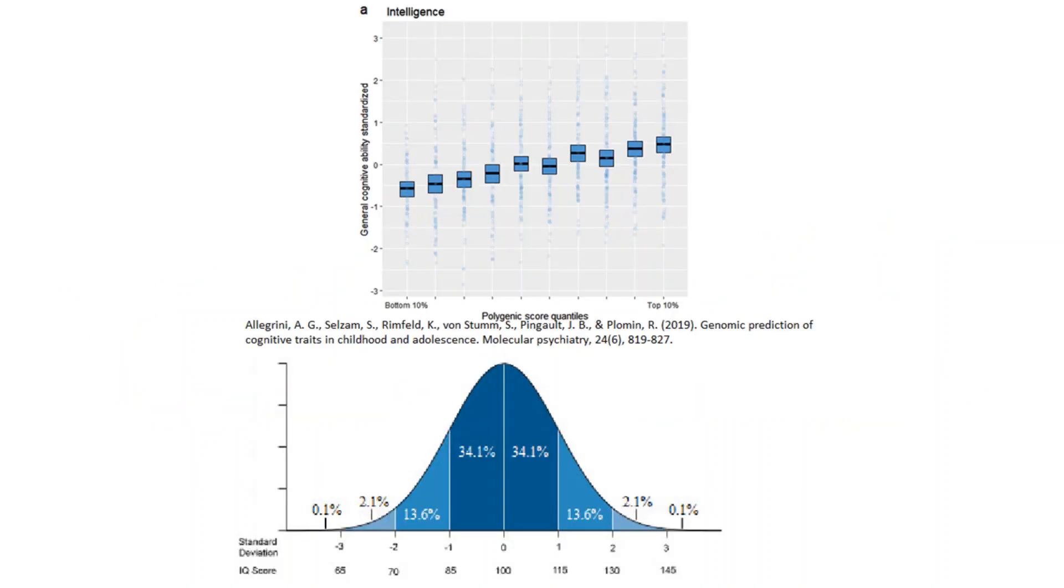Let us look at the results of a polygenic score model for IQ alongside the distribution of IQ scores in the population. IQ scores are normally distributed, with the 50th centile being defined as an IQ of 100, and other scores are shown at each standard deviation from the mean on this diagram.